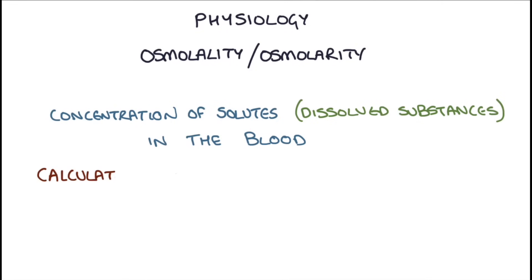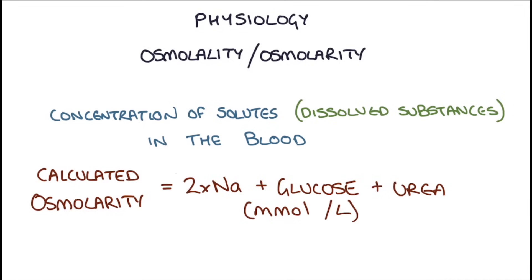The formula for calculating osmolarity is: two times sodium plus glucose plus urea, all measured in millimoles per liter. Osmolarity is important because it controls the distribution of fluid in the body.